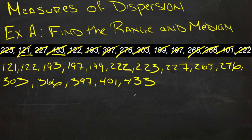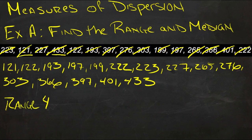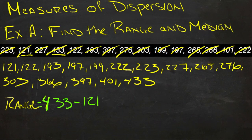So 433 — now to find the range we just take 433 minus 121. So the range is 433 minus 121, which is going to be 311. So the range is 311.